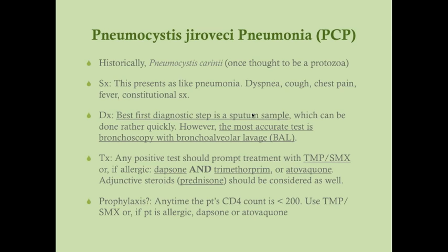Prophylaxis for PCP is given whenever the CD4 count drops below 200, using trimethoprim-sulfamethoxazole, as this fungus is found in the natural environment. If the patient is allergic to sulfa, dapsone or atovaquone can be used as monotherapy for prophylaxis.